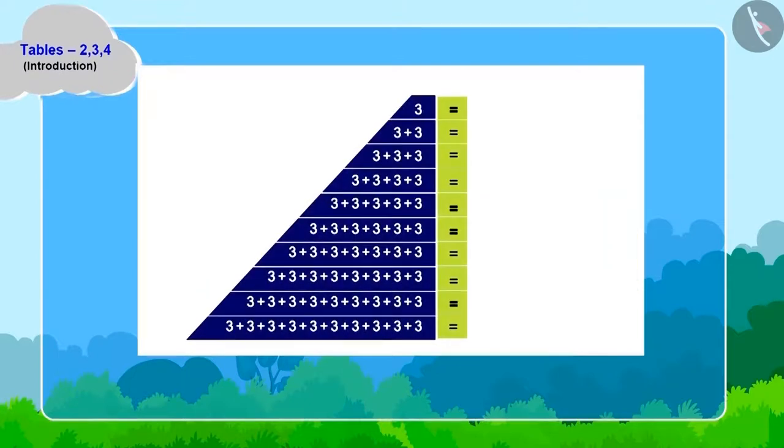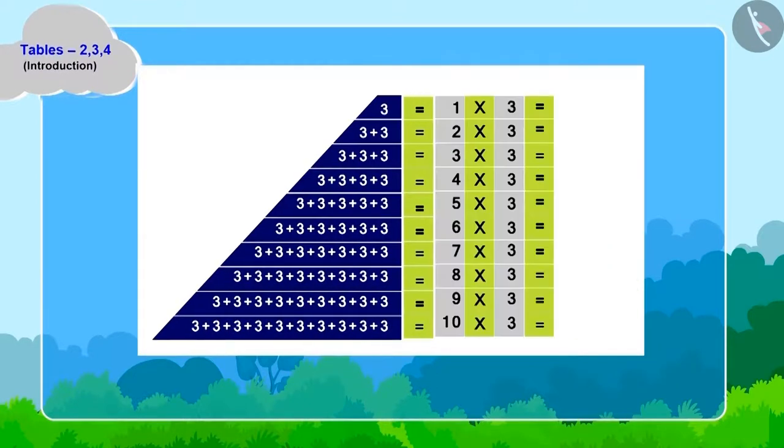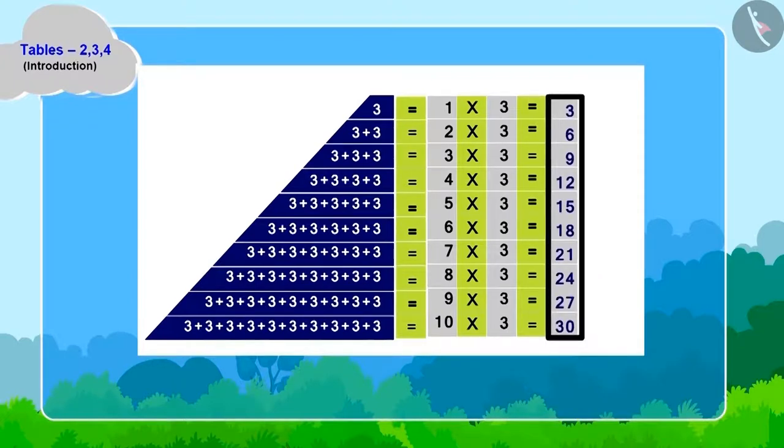And children, now if we write it in the form of multiplication, then what will we get? Absolutely right! The table of three!